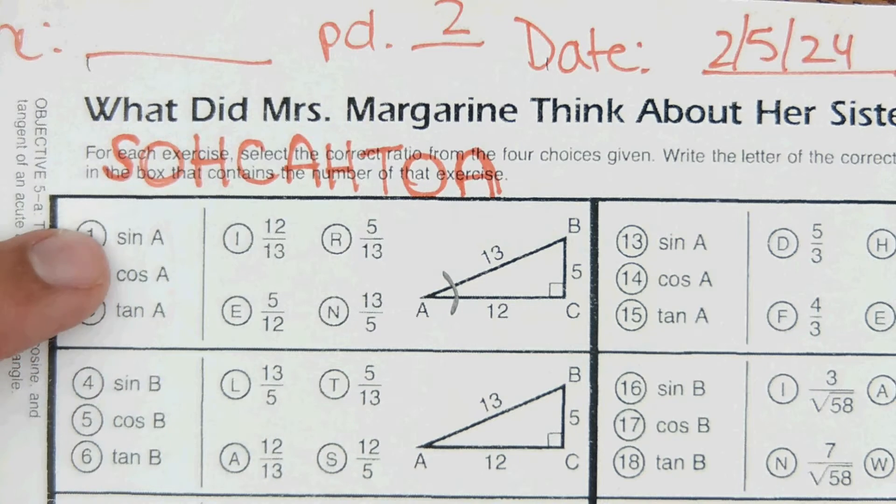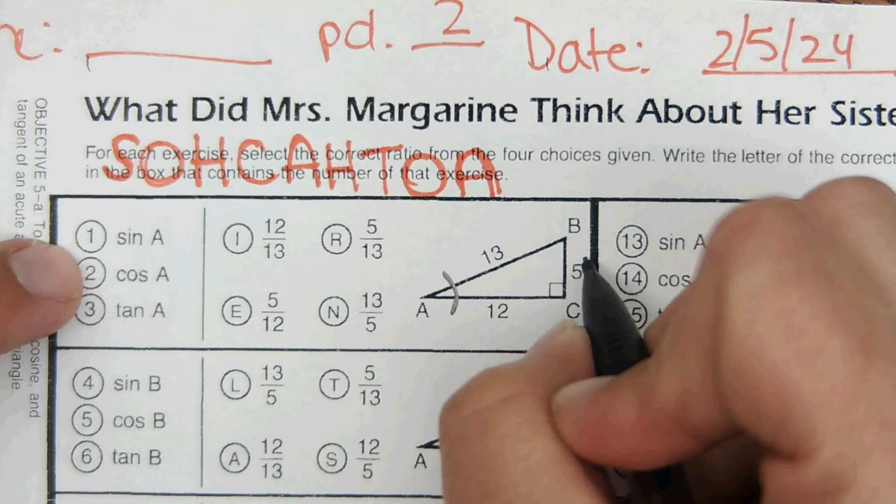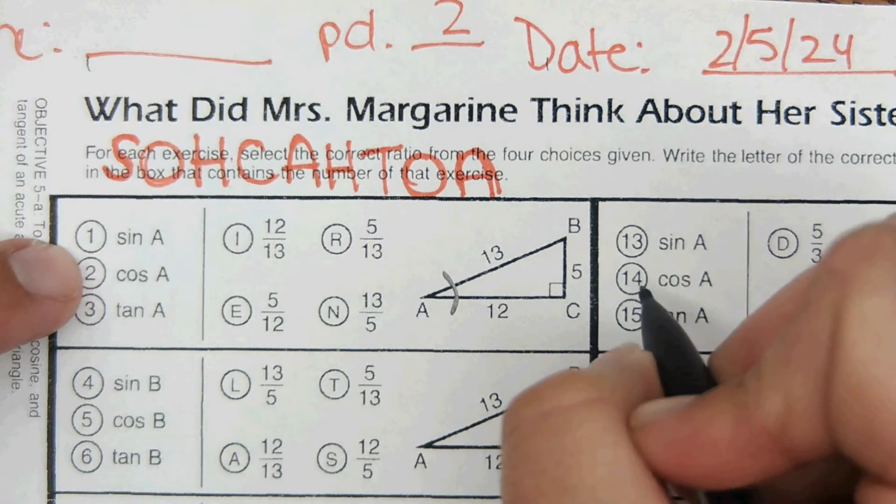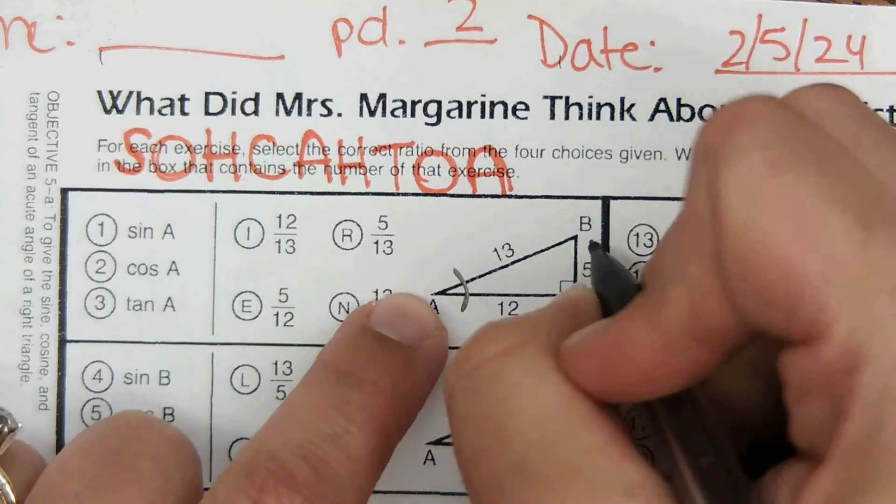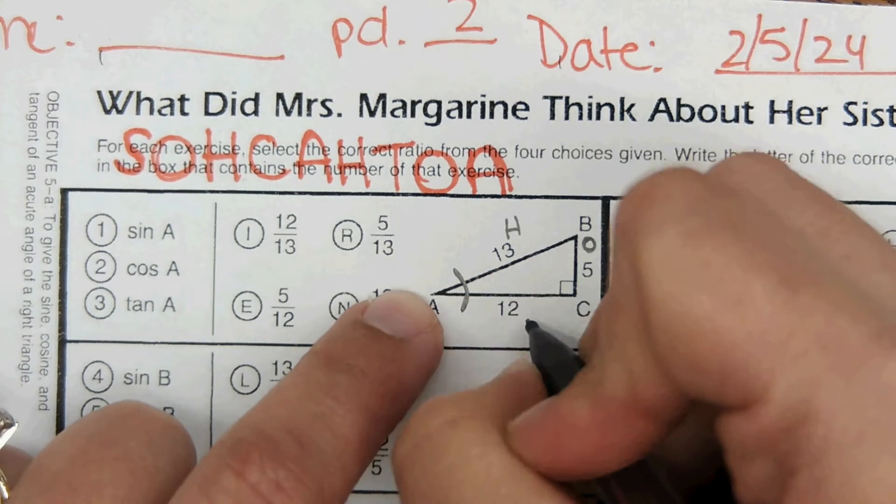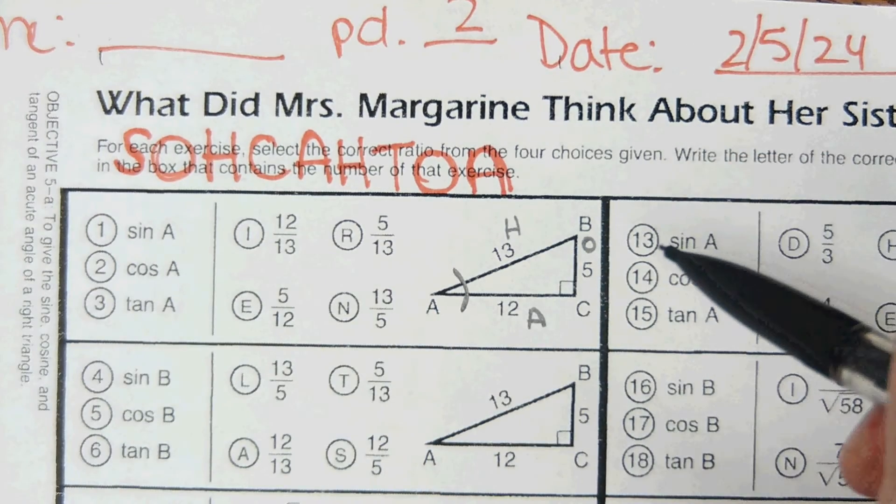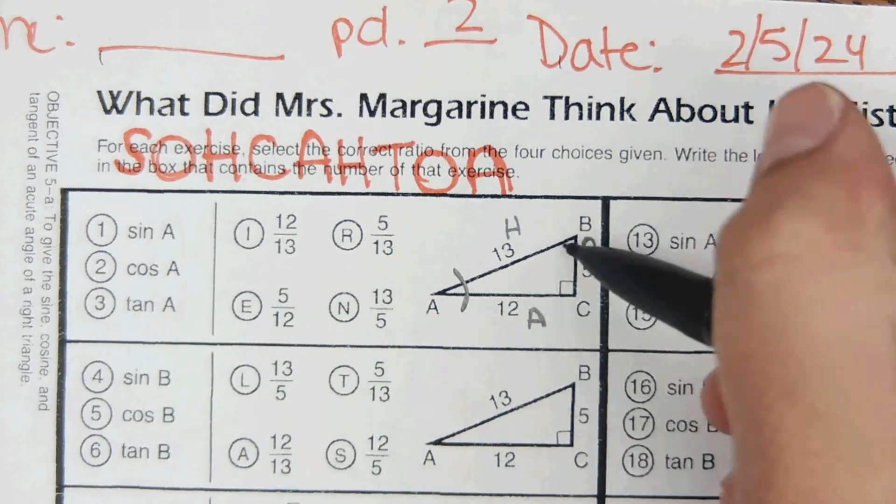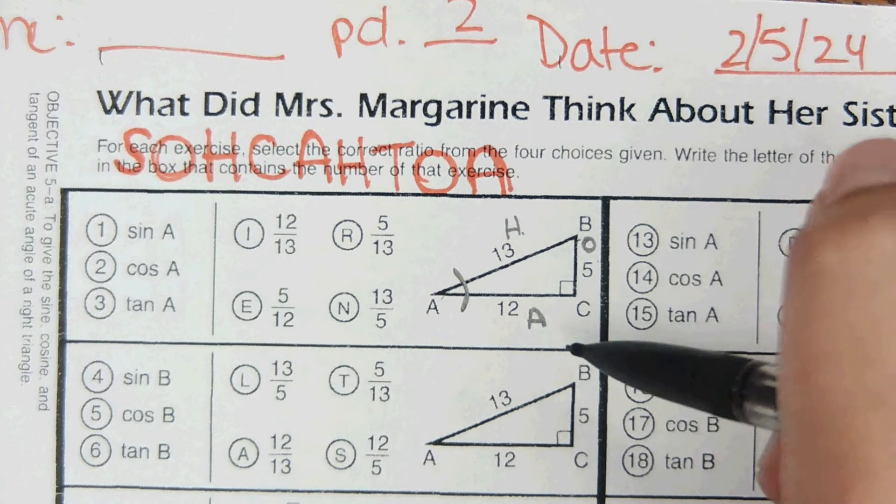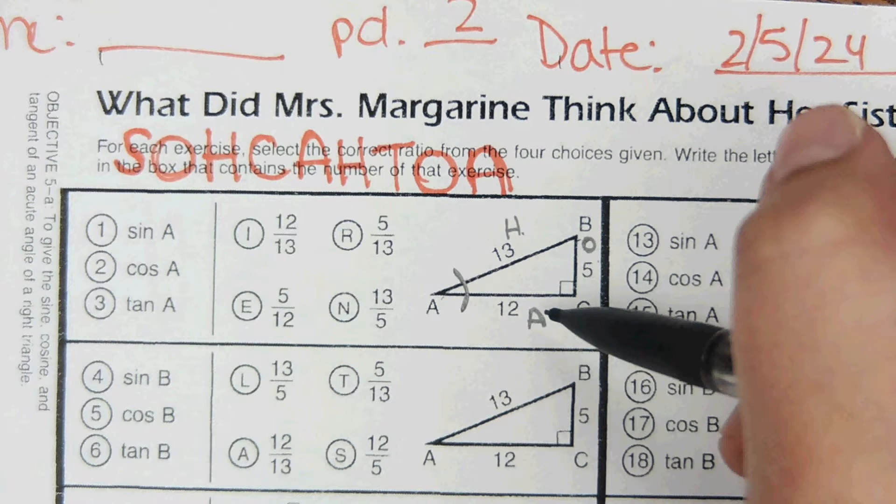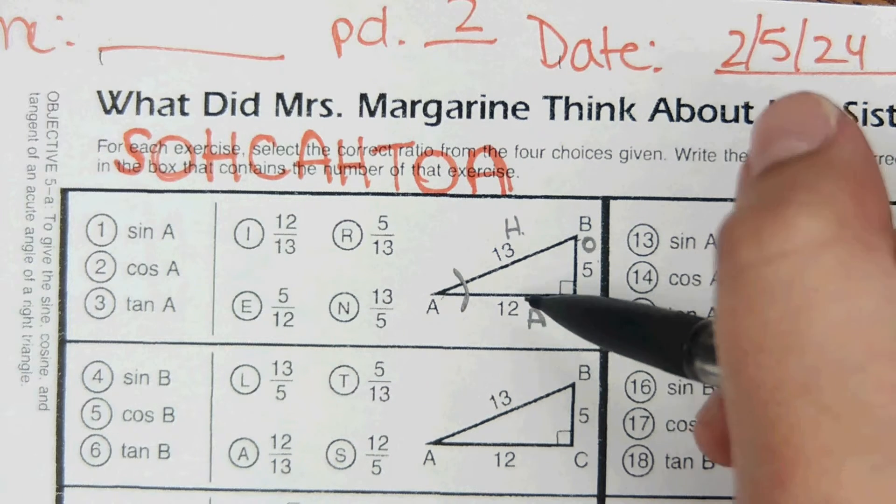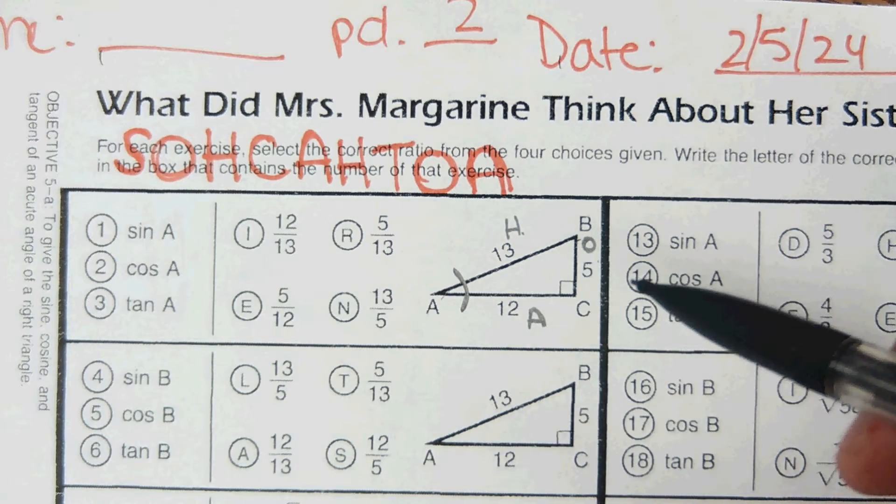Before you try to figure out these ratios, you want to label each side. So from this designated angle A, we have opposite, hypotenuse, and adjacent. So opposite this angle, hypotenuse is your longest side that's opposite the 90 degree angle, and then adjacent is the side left over.